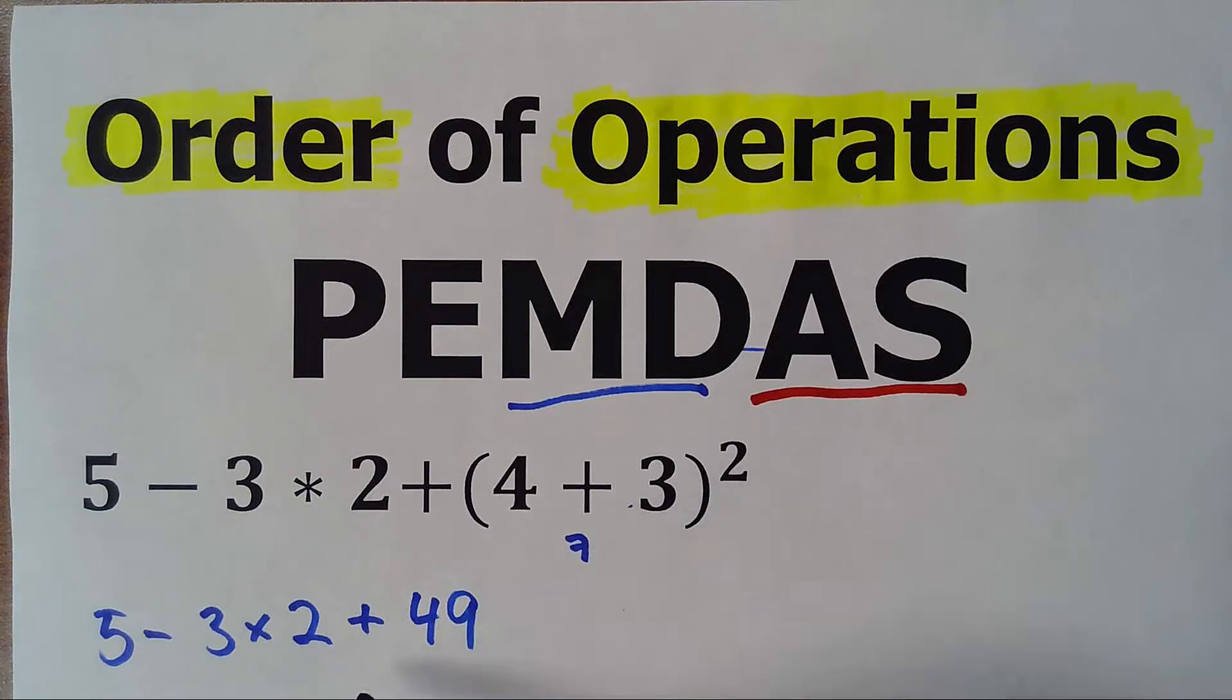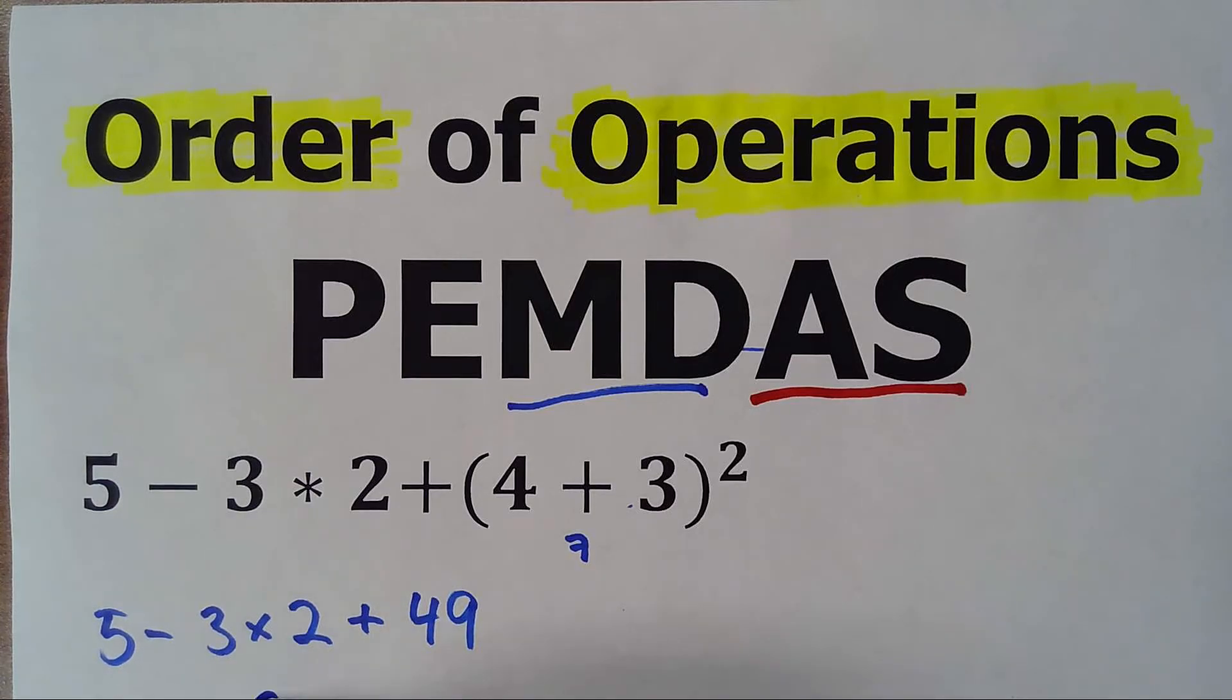Okay, so now we go for multiplication, negative 3 times 2 is negative 6, so 5 minus 6 plus 49. Another way to do it is we put the minus here, and 3 times 2 is 6, so 5 minus 6 plus 49, that would be equals 48.